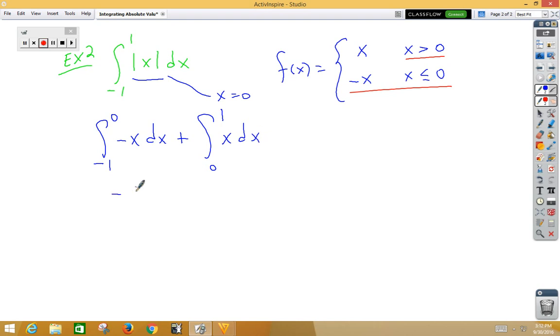Integrate, we get negative x squared over 2 from negative 1 to 0 would be 0 minus negative 1 half.